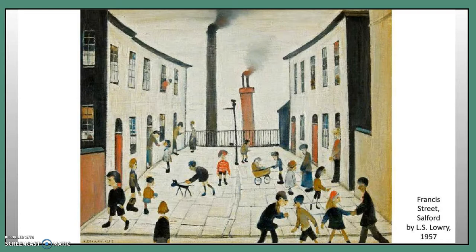For our third image, 1957's Francis Street, we're going to be thinking about those same questions. Is this a realistic image of what you think Francis Street would have looked like at that time? How much detail has Lowry included — is there lots of detail or is it quite sparse? How do you think he painted this, and what tools do you think he could have been using?